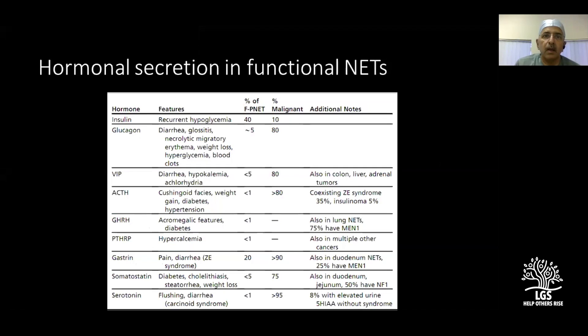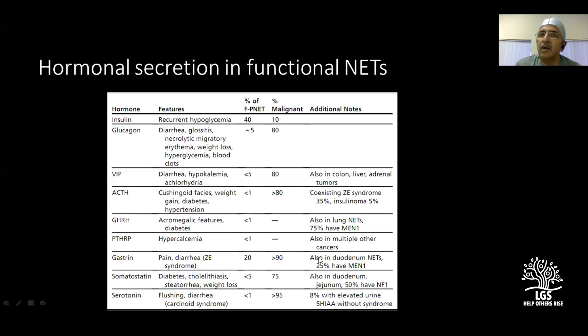Insulinomas produce recurrent hypoglycemia and are the commonest functioning PNET. Gastrinomas are next. VIPomas, somatostatinomas, and all others are much less common. Importantly, insulinomas are malignant in only 10 percent of cases, whereas more than 90 percent of gastrinomas are malignant. Most other functioning tumors are predominantly malignant.